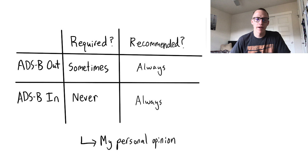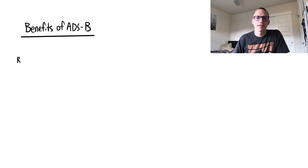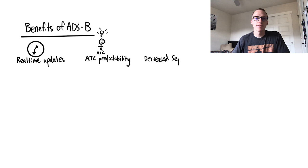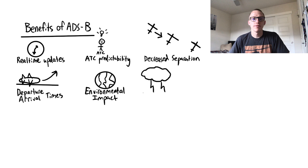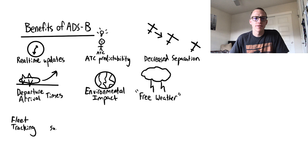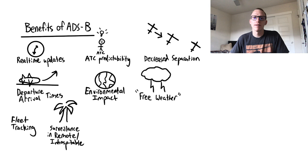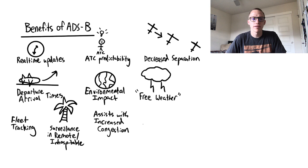ADS-B offers a wide range of benefits. Updates are considered real-time, providing ATC and pilots with more accurate pictures of traffic. And with a clear picture, ATC predictability increases, so their separation can decrease. Departure and arrival times decrease, and environmental impact decreases. FIS-B gives general aviation pilots free weather. Operators can track their own fleets. Surveillance has become available in remote and inhospitable areas, such as Alaska, mountainous areas, or the Gulf. It assists with increased congestion, and general safety is increased. And lastly, Search and Rescue has more accurate last position info.